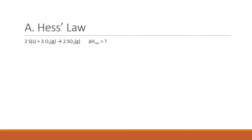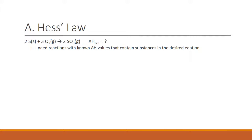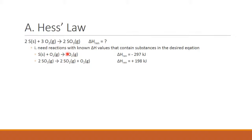We want to find the heat of reaction for the reaction where two moles of sulfur solid react with oxygen gas to give sulfur trioxide gas. To use Hess's law, we need known values for heats of reaction for different reactions involving these same substances. The two given equations are: solid sulfur reacting with oxygen to produce sulfur dioxide (the most common reaction), and the decomposition of sulfur trioxide into sulfur dioxide and oxygen. The enthalpy changes for both of those reactions are known.